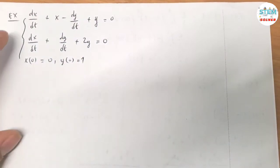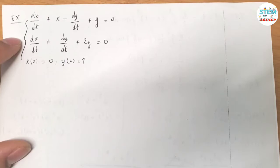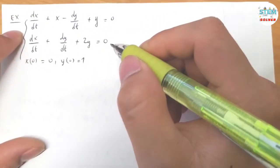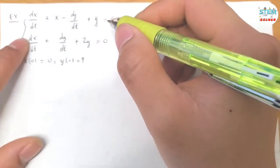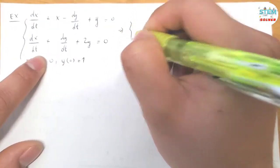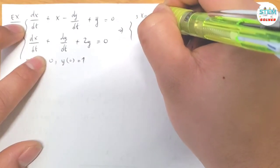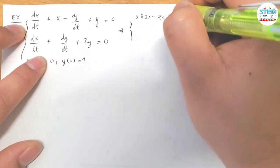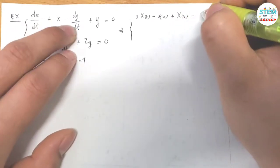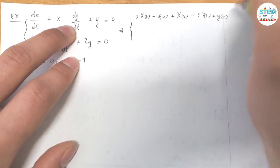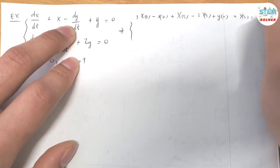Using the Laplace transform to solve the system of linear equations, and you are also given the conditions here. Apply the derivative theorem on both of these equations. I have S·X(s) minus X(0) plus X(s) minus S·Y(s) plus Y(0) plus Y(s) equals 0.